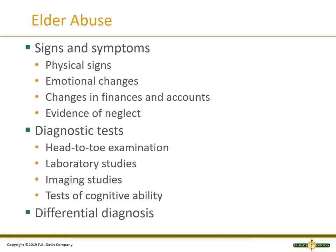Signs and symptoms include physical signs, emotional changes, changes in finances and accounts, and evidence of neglect. When doing diagnostic testing, we do a head-to-toe examination, laboratory studies, imaging studies, and tests of cognitive ability — making sure there isn't another differential diagnosis. Could they be showing symptoms of dementia or Alzheimer's? Are their electrolytes off? Do they have a urinary tract infection? Make sure you're ruling out a metabolic cause.